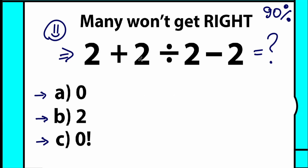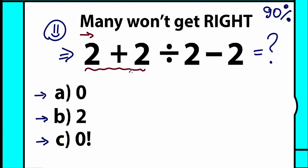So let's look at it: 2 plus 2 divided by 2 minus 2. On the first sight, it's a very easy question. A lot of students might say, 'Hey mister, this is the easiest question I've ever seen.' We have only addition, division, and subtraction, so it's not that hard. For example, let's start with addition, from the left side to the right side. So we have 2 plus 2 equal to 4.